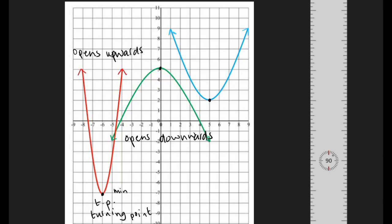When it's at the bottom, we call it a minimum value. When it's at the top, because the parabola is not going any higher, this is the maximum of the parabola—the maximum point, which is also your turning point.